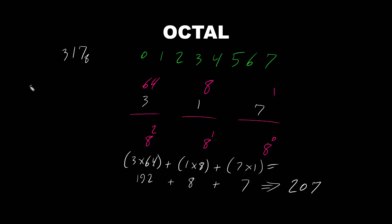Therefore, 3, 1, 7 octal number is equivalent to 207 decimal.